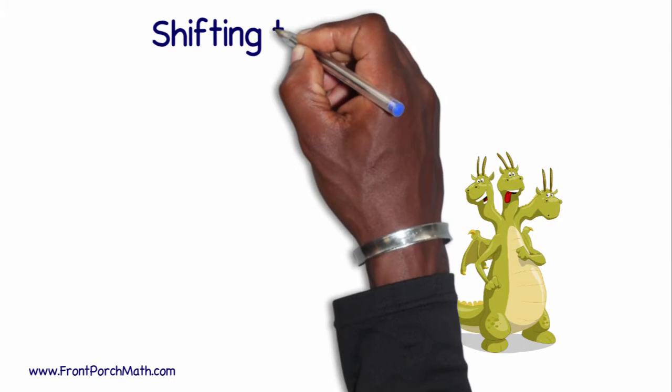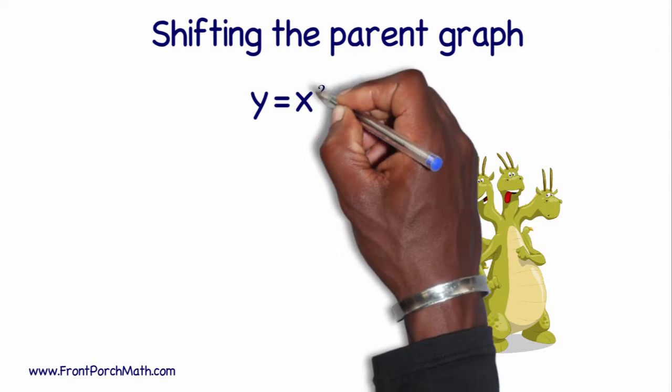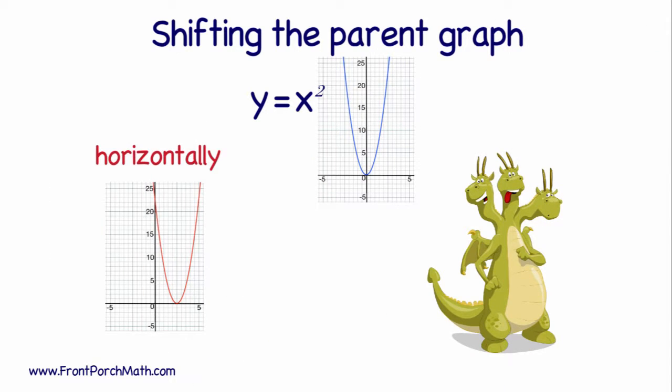Today we're going to determine how we can shift our parent graph y equals x squared horizontally along the x-axis.